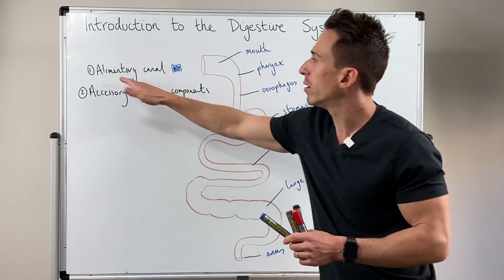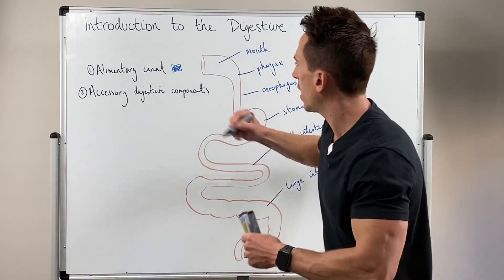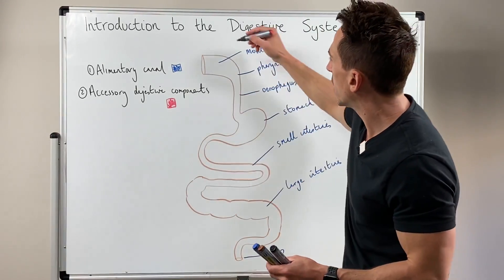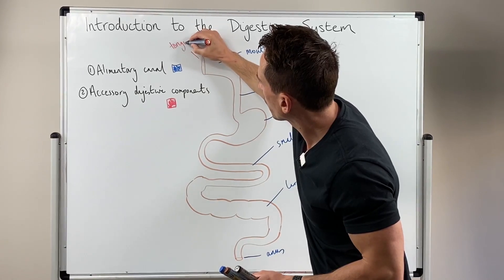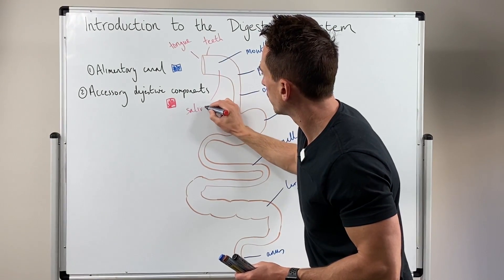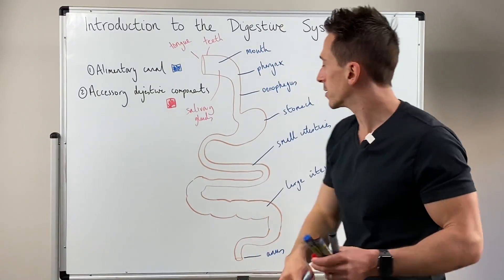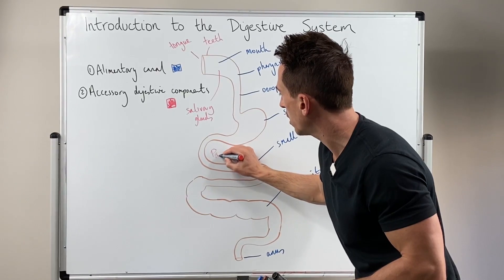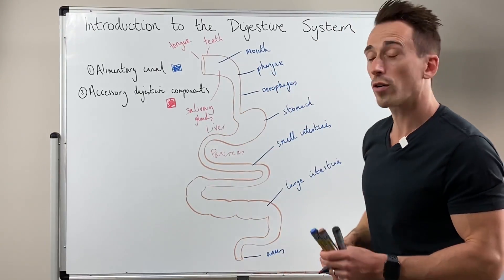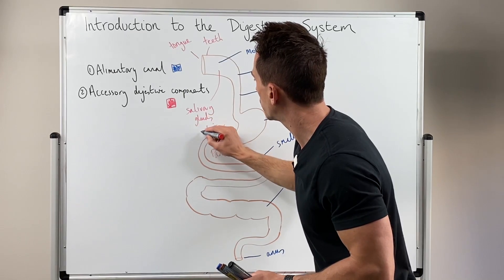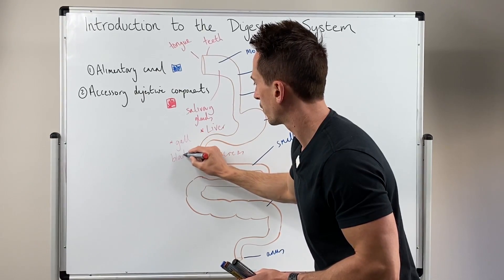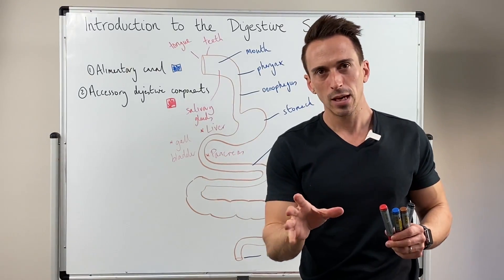Now these in blue are all aspects of the alimentary canal. Now the accessory components, which we're going to highlight here in red, include those of the oral cavity: the tongue, teeth, and salivary glands, of which there are many kinds. It also includes the pancreas, which sits around about here, and the liver, which sits around about here. Now underneath the liver we've got something called the gallbladder, so we've also got the gallbladder. And these are all various aspects of the accessory structures.